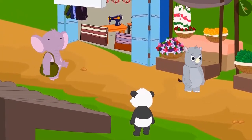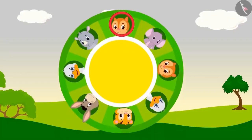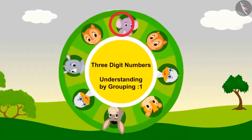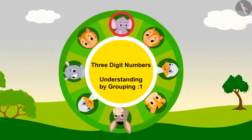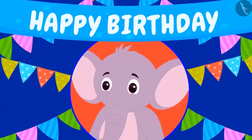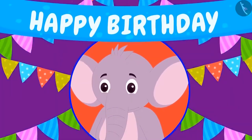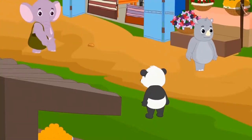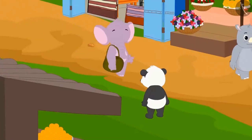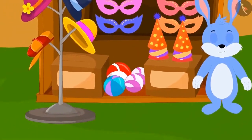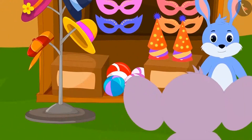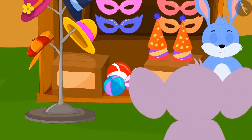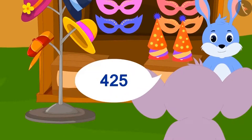Do you like going on a tour of the market? Let's go on a market tour with Appu and learn more about three-digit numbers by grouping them. On the occasion of Appu's birthday, he has invited everyone to the party. To prepare, he has come to buy items from the market. First, Appu visits Bunny Rabbit's stall — he has to buy 425 hats for all the guests.